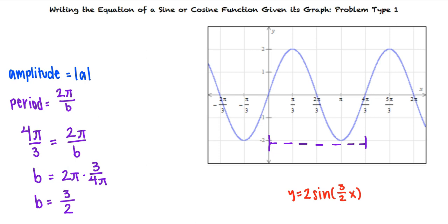So to write the equation of a given sine or cosine function, we must first determine which type of function the graph corresponds to. The equation will either be of the form y equals a times sine bx or y equals a times cosine bx. We can then use the amplitude and period of the graph to determine the a and b values and substitute them into the proper equation to determine our final answer.